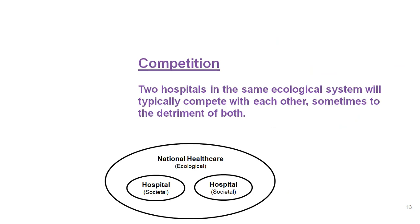Another way to look at how systems interact is competition. Here are two hospitals in the same ecological system that would typically compete with each other, sometimes to the detriment of both. The fact that they can hurt each other is one indication that they are interacting ecologically. The national healthcare system doesn't have to be the full nation — it could be two hospitals in central Florida or central Pennsylvania. Whatever you decide is the scale of the ecological system is how you would model it.